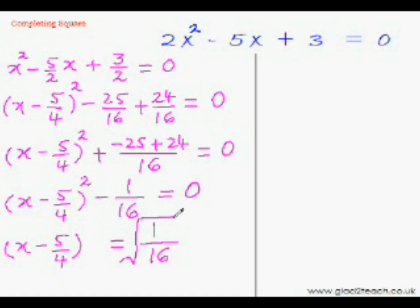And you already know that when things go from one side to the other they become opposite of what they were. So this means x minus 5 by 4 is equal to plus minus 1 over 4, as the square root of 1 over 16 is 1 over 4. As the square of both 1 over 4 and minus 1 over 4 is 1 over 16.